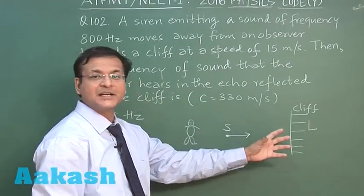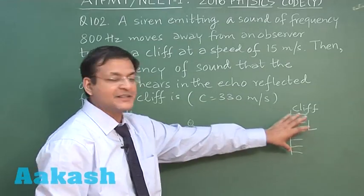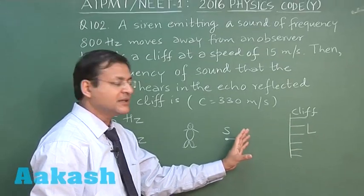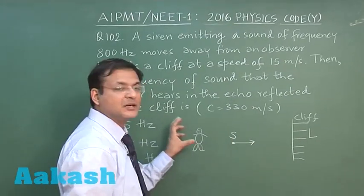So whatever source is producing, this is going, hitting the cliff, and it is coming back. Now whatever it will receive, the listener will receive, same frequency will be reverted, and that is the frequency that will be heard by this observer.